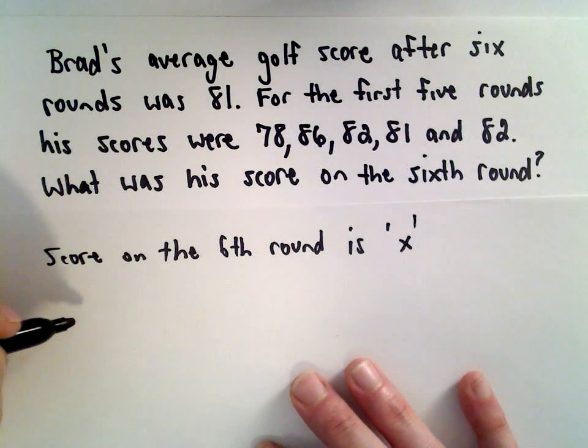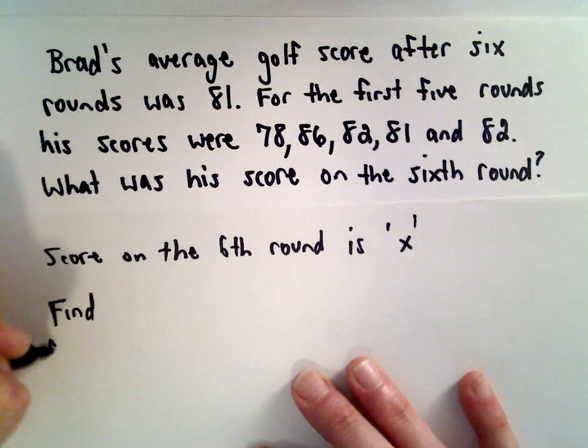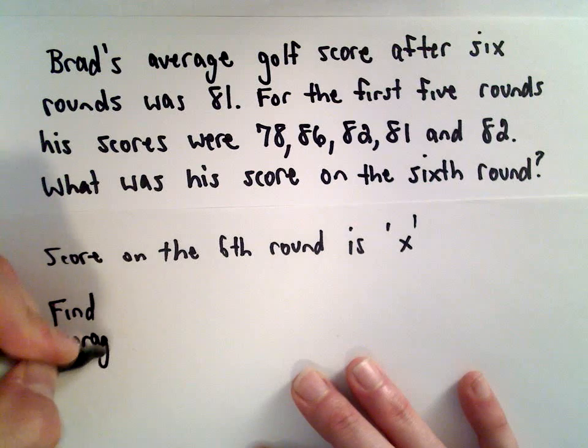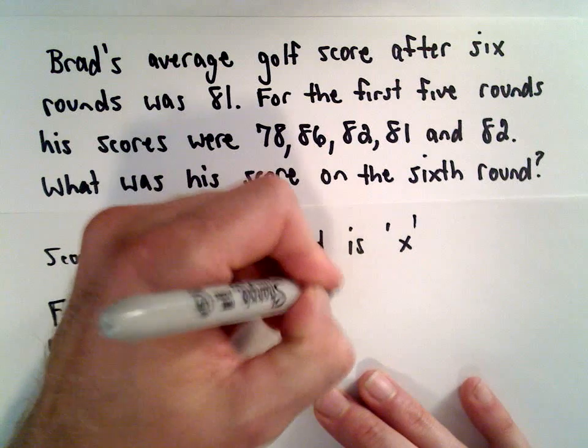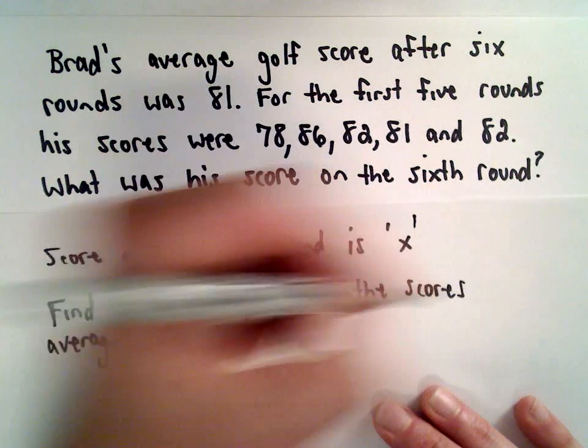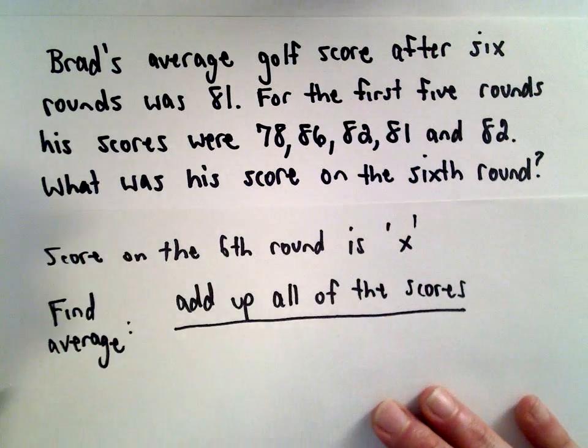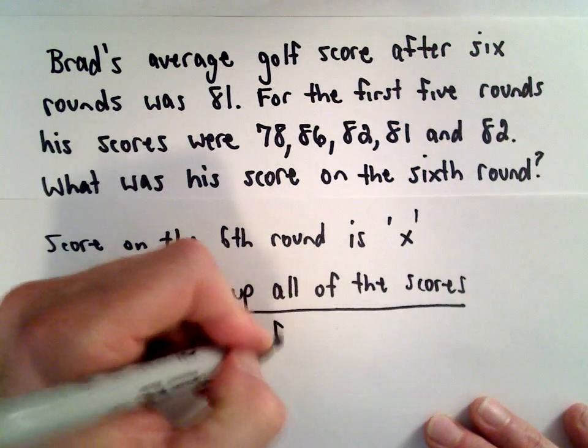How do you compute an average? To find the average, we add up all of the scores and we divide that by the number of scores, or the number of rounds played.